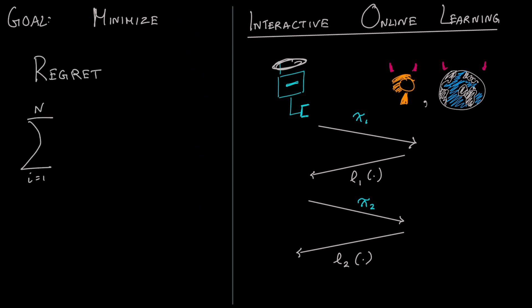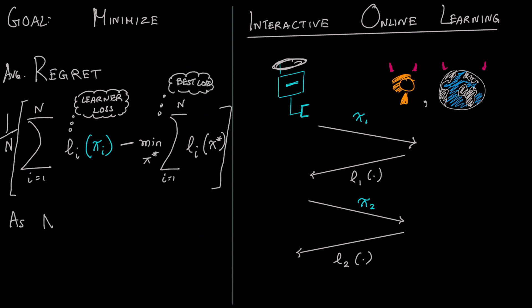The goal of the learner is to minimize regret. Regret is the difference between the cumulative loss of the learner and the cumulative loss of the best policy in hindsight over n rounds of the game. A good learner can drive the average regret to zero as the number of rounds goes to infinity. This is paramount to the learner doing as well as it could have had it seen all the data up front.